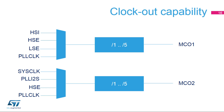The various clocks can be output on an I/O. The microcontroller clock output feature allows you to output on a pin one of these six clocks: HSI, HSE, LSE, SYS-CLK, PLL-CLK, and PLL-I2S.